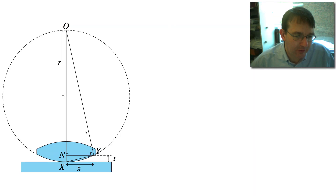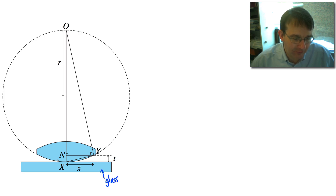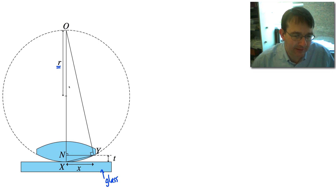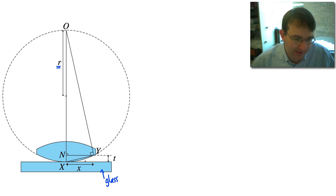Here we have a converging lens placed on a flat sheet of glass. The surface of the converging lens is part of the surface of a sphere, so we have a radius of curvature associated with that surface, which we call little r. We want a relationship between the distance from the point of contact and the thickness of the wedge, because this is where light reflects off the bottom surface of the lens and the top surface of the sheet of glass to generate our interference pattern.